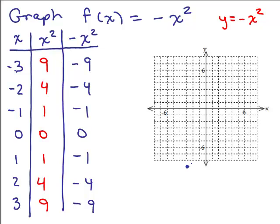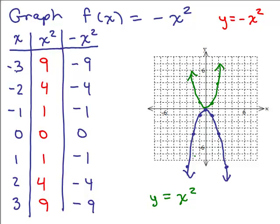Here's what you should get: (-3, -9), (-2, -4), (-1, -1), (0, 0), (1, -1), (2, -4), (3, -9). This time we have a parabola going down — it's a mirror image of y = x² which goes up. Notice that x² can't be negative, but putting a minus sign in front means all y values are negative, so the whole parabola falls below the x-axis.